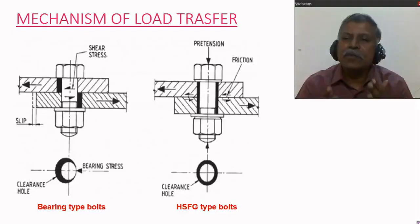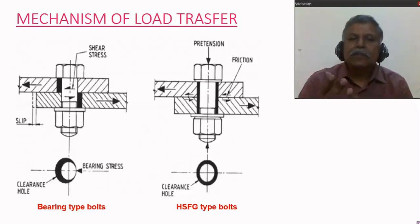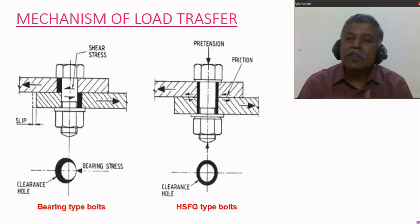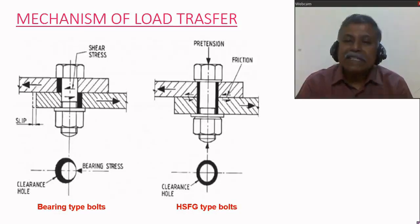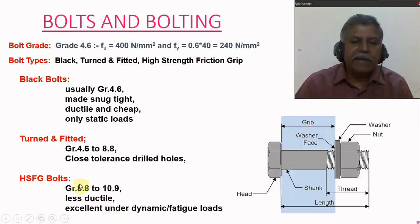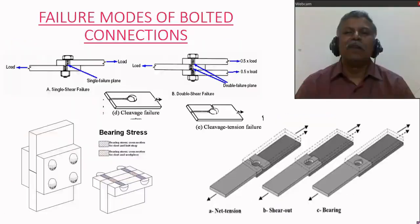The pretension can be calculated using the formula available in IS 800. Since the bolt is subjected to pretension before applying the load, we should not use a normal grade of bolt — this type of bolt needs high strength. That is why we use high strength grades such as 8.8 to 10.9.